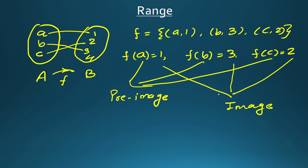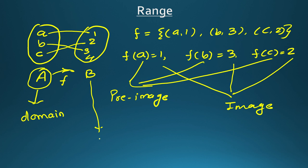Now what else can we understand from here? The elements of set A are called the domain. Elements of set A are called domain, and B is called the codomain. If a function is defined from A to B then A is called the domain and B is called the codomain. Now, what is range?